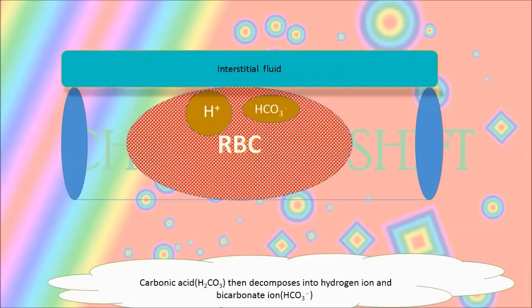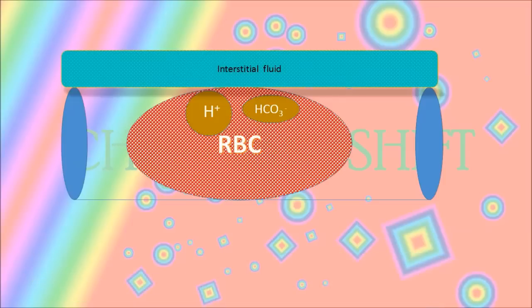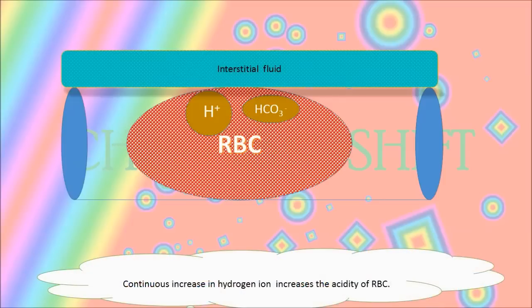This H+ is impermeable to the RBC wall, so it cannot penetrate it. However, this continuous increase in hydrogen ion increases the acidity of the RBC. Now bicarbonate is permeable to the RBC wall.